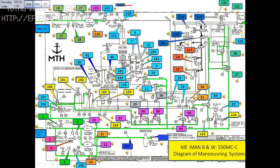This picture shows the manoeuvring diagram of main engine make MAN B&W. Today I will be explaining this portion where the reversing takes place. I click on block 9 to go to the actual picture on the ship.